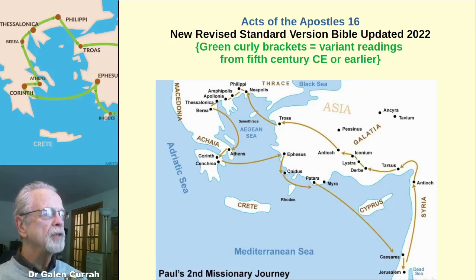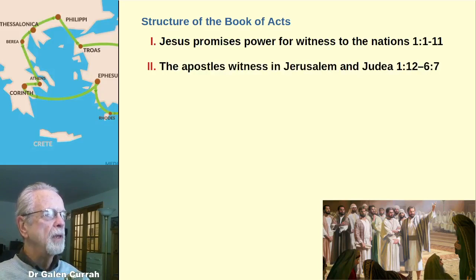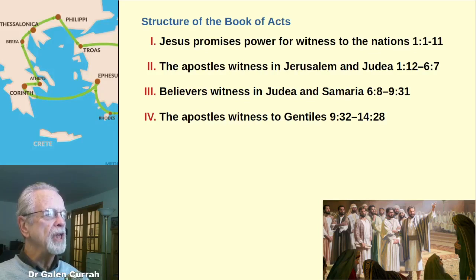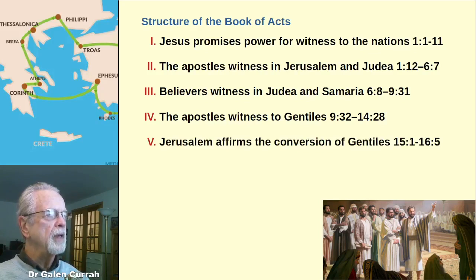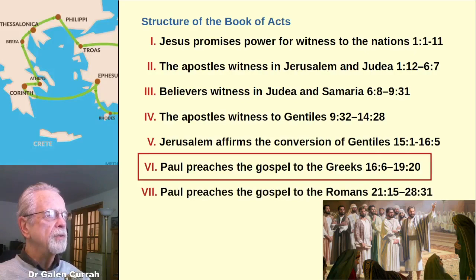This chapter introduces the second missionary journey of the Apostle Paul and his co-workers. The structure of the book seems to present seven main sections: first, Jesus promised power for witness to the nations; second, his apostles began to witness in Jerusalem and Judea; third, other believers witnessed in Judea and Samaria; fourth, the apostles began to witness to Gentiles, that is, non-Jews; fifth, a council at Jerusalem affirmed the conversion of Gentiles without their first converting to Judaism; sixth, Paul begins preaching on the Greek mainland; and seventh, he will do so amongst the Romans. Today's lesson begins the transition into section 6.